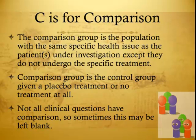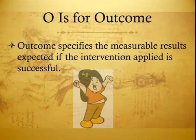The Comparison group is the control group given a placebo treatment or no treatment at all. Not all clinical questions have a comparison, so sometimes this may be left blank. Outcome specifies the measurable result expected if the intervention is successful.